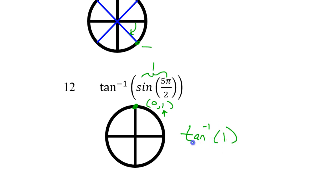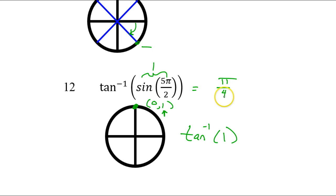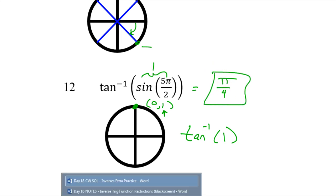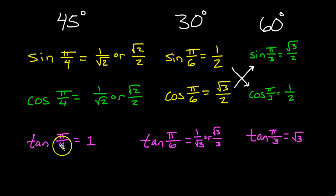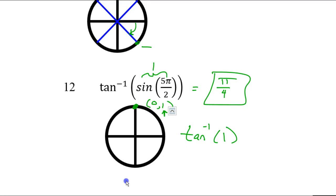Now I'm going to evaluate inverse tangent of 1. Inverse tangent is just an angle — it's the angle whose tangent is 1. What angle has a tangent of 1? Hopefully you memorized that — it's pi over 4. Tangent of pi over 4 is 1. So that's number 12 — the answer is pi over 4.